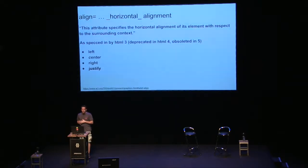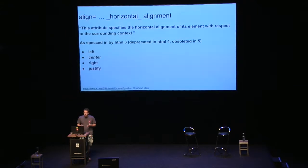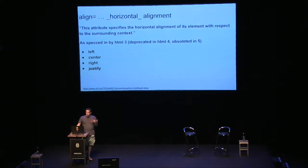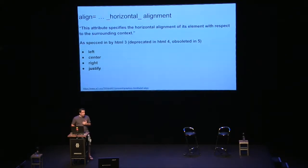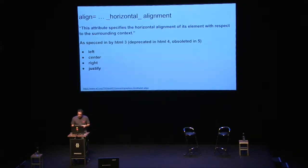Align is for horizontal alignment, and it was specced in HTML3. It was deprecated in HTML4 and even obsolete in HTML5 — they really wanted to get rid of it, but it still works. It's specced to have four values: left, right, center, and justify. Left and right work the same as image does, where text flows around it. Center, you'd expect the iframe to be centered, but in fact it will vertically align the first line of text to the left or right of the iframe. I have no idea what justify was supposed to do — it doesn't appear to do anything.